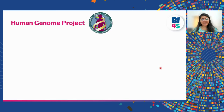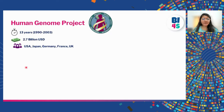The first attempt to read the human genome was called the Human Genome Project. It happened over 13 years, from 1990 to 2003, cost about 2.7 billion US dollars, and was done by researchers across five different countries. If you're interested in the milestones, you can visit the project's website.